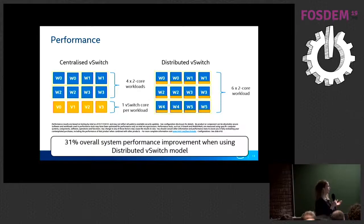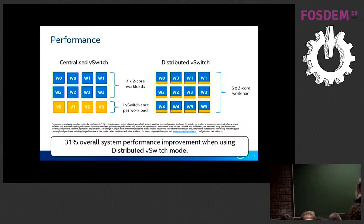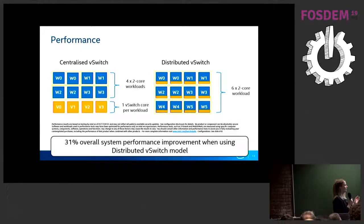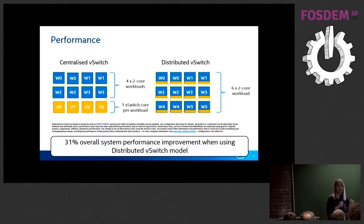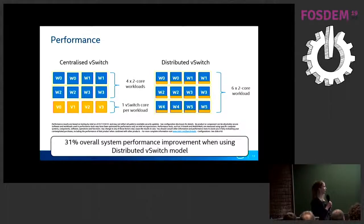An interesting thing to do is to take those four idle cores and run two more workloads. Then we can compare at a system level — 12 cores versus 12 cores for both solutions. In this case the distributed v-switch outperforms the centralized v-switch by 31% when you use the full resource budget. The key takeaway is that you do suffer a hit at the workload level, but when you step back and look at the bigger picture — full resource budget and utilization — the distributed v-switch appears to be the more compelling option.